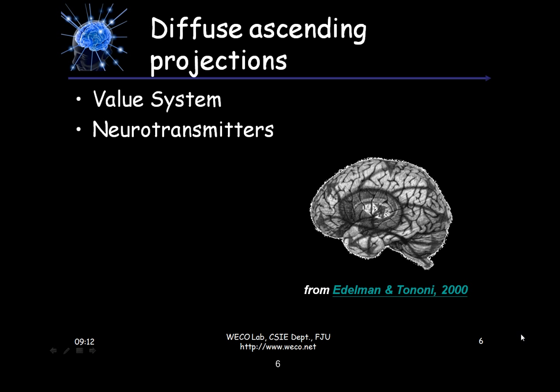Now the third brain network is the diffuse ascending projection. What is the diffuse ascending projection? This is a kind of value system. We have some neurotransmitters in our brain, and each transmitter will have its own pathway.